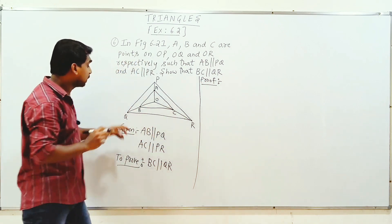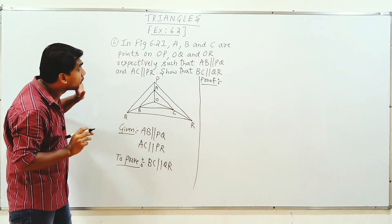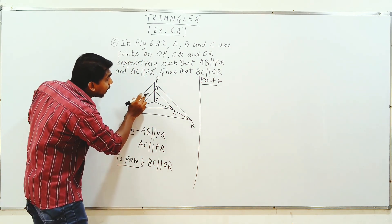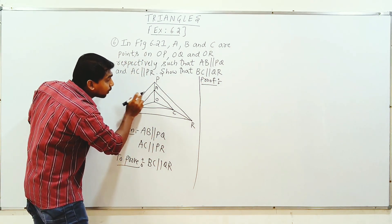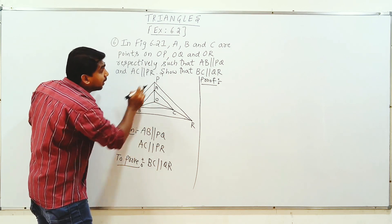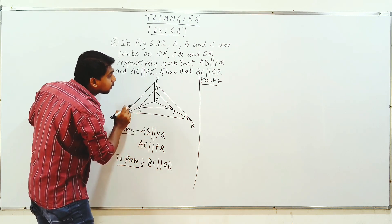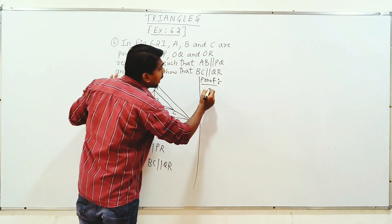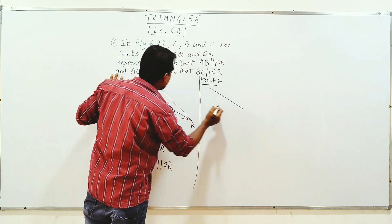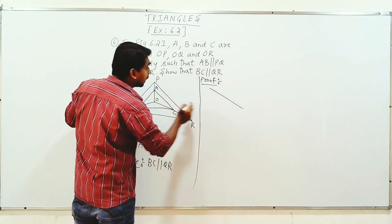First part: AB parallel to PQ. Here is the triangle — the triangle is POQ — and this triangle is drawn separately so that it is easier to work with.